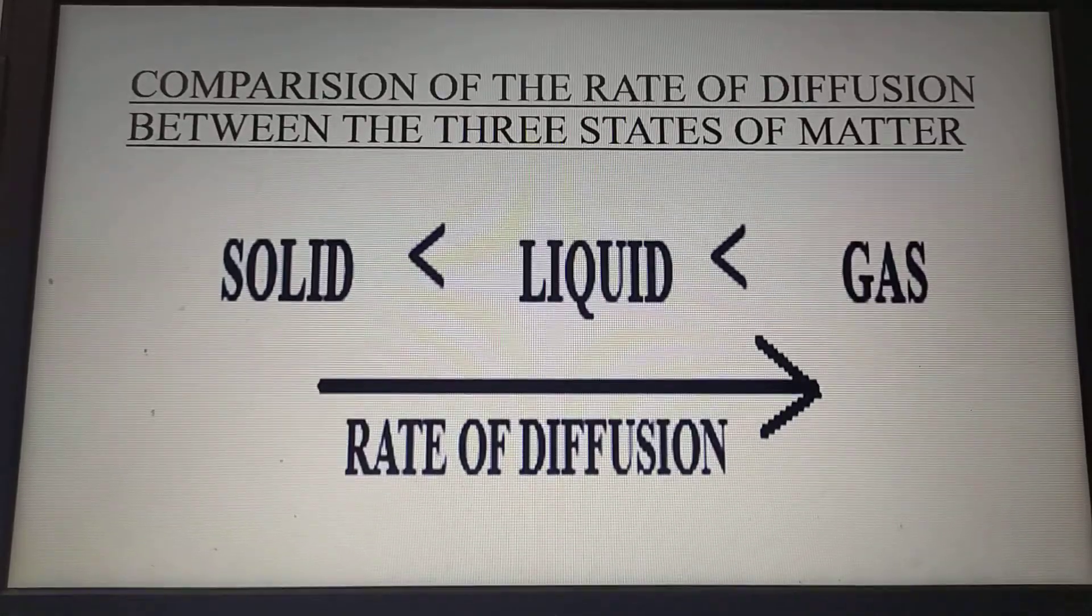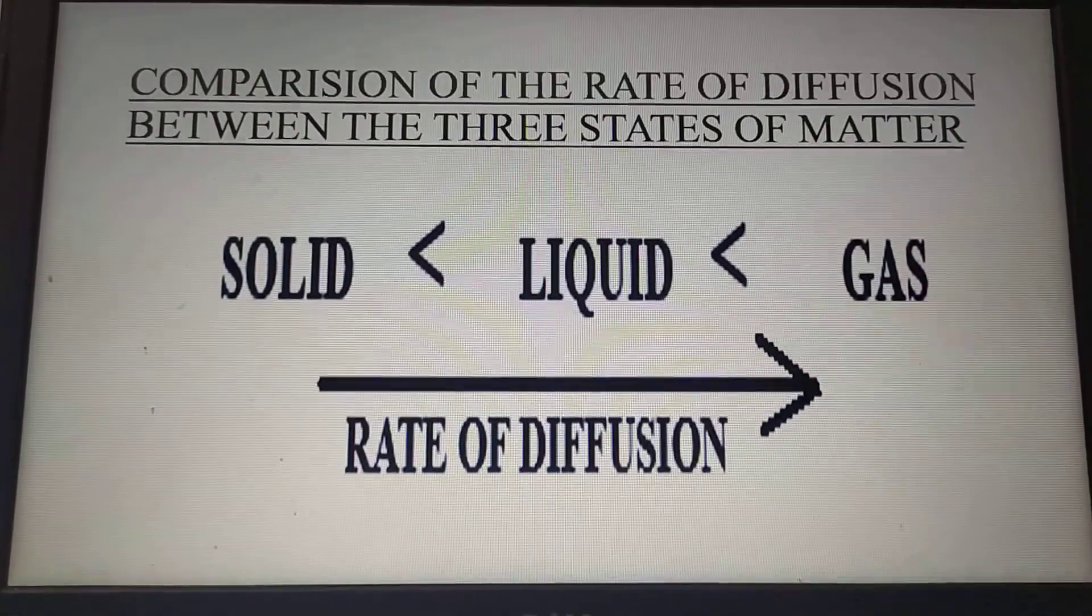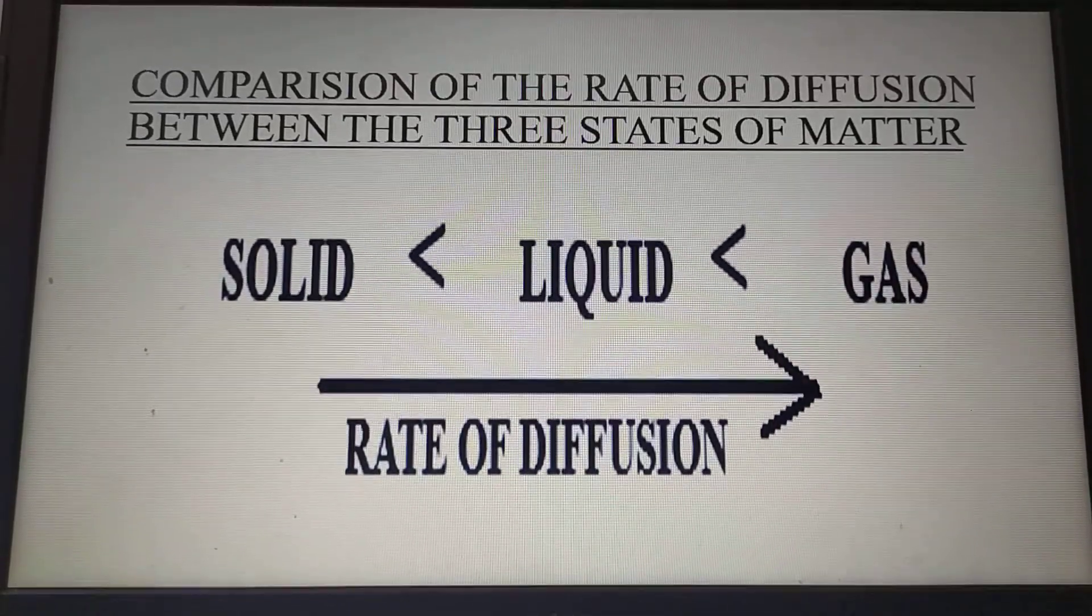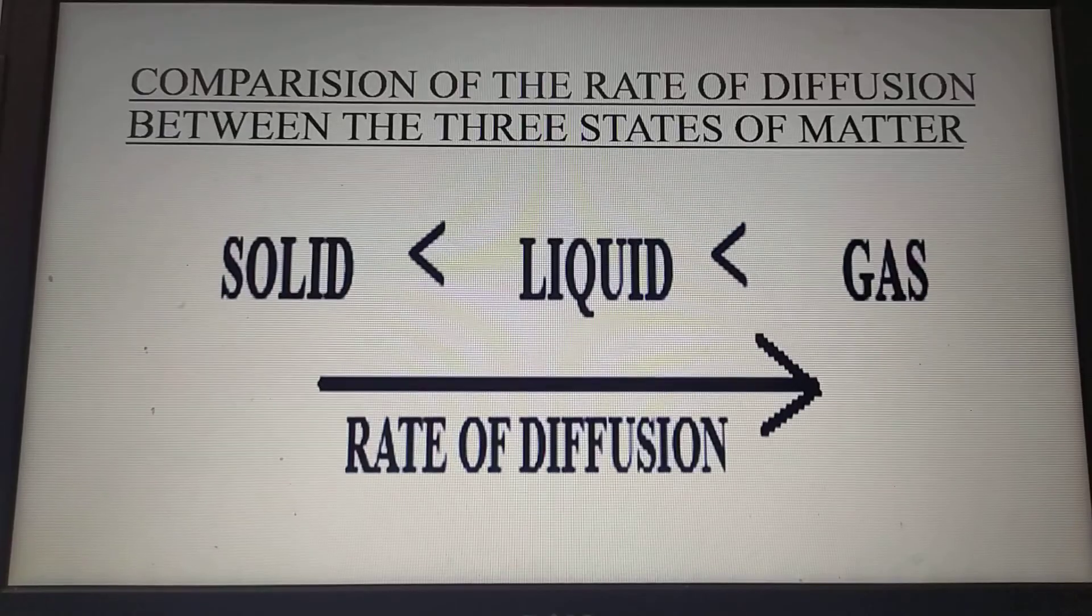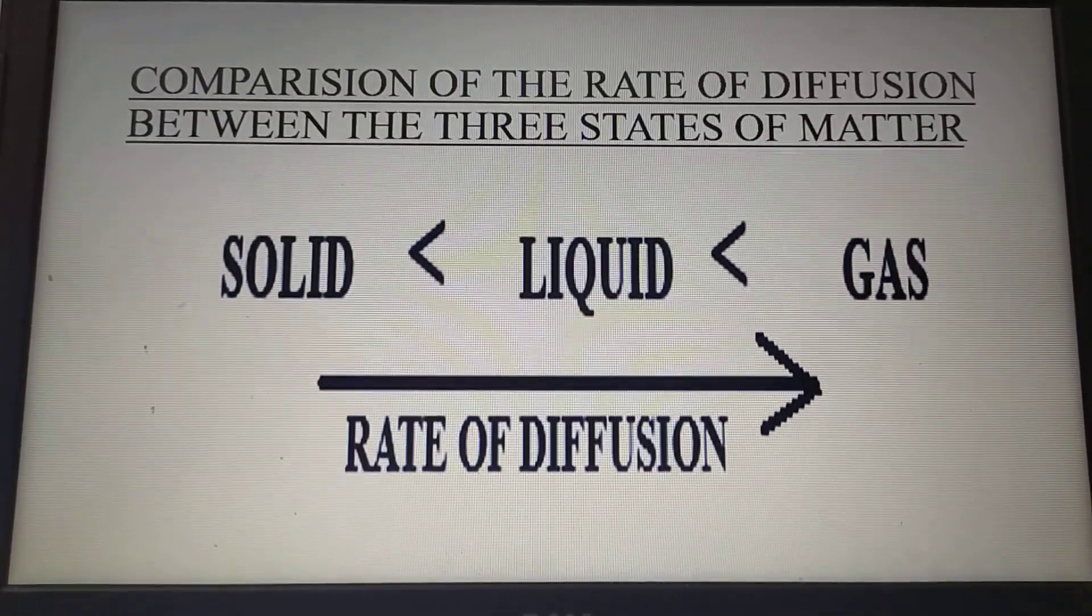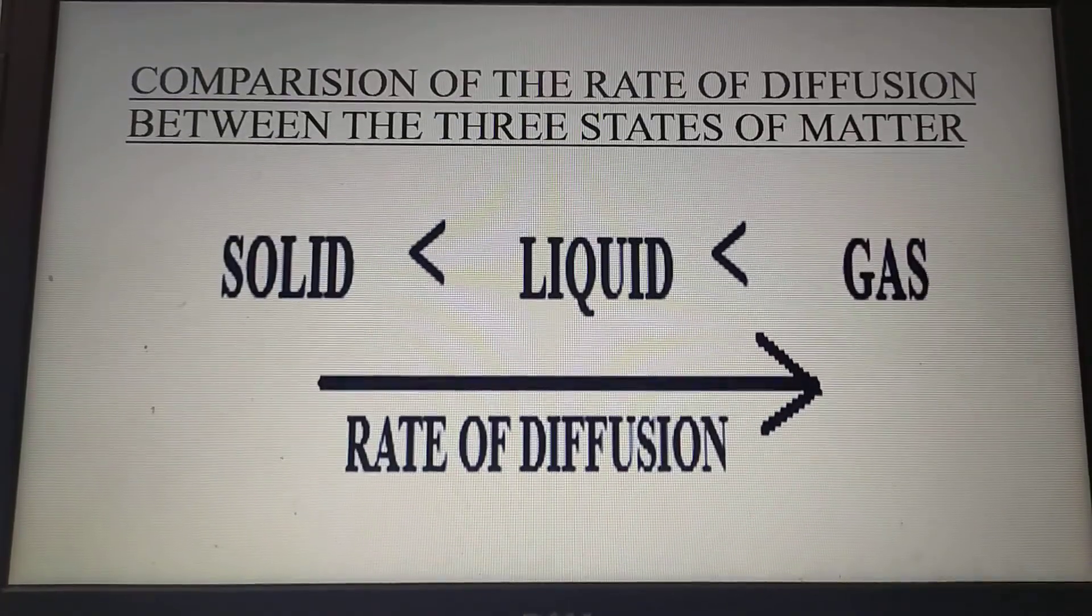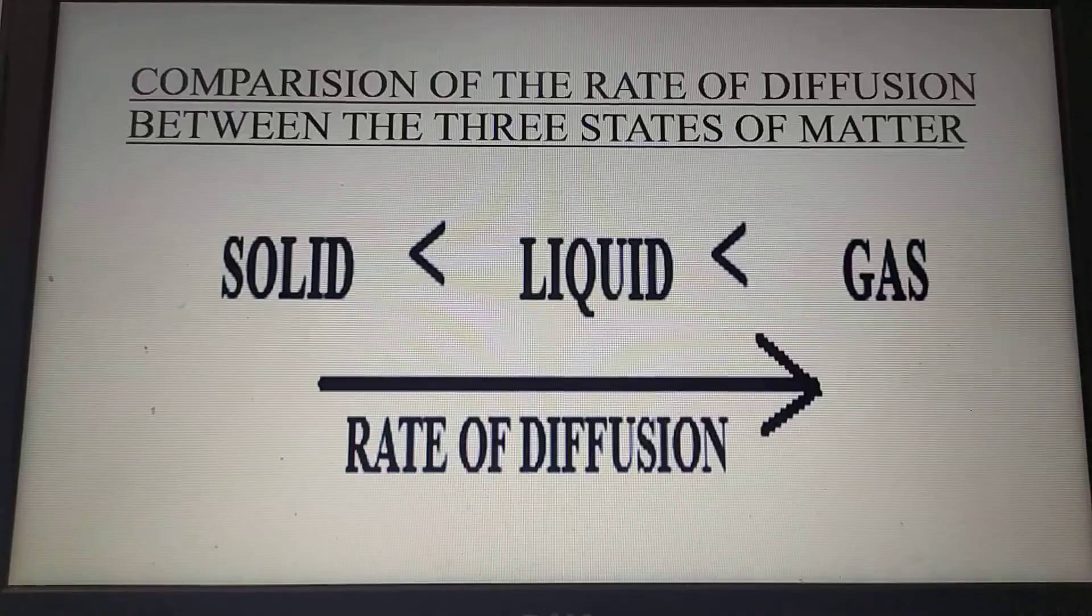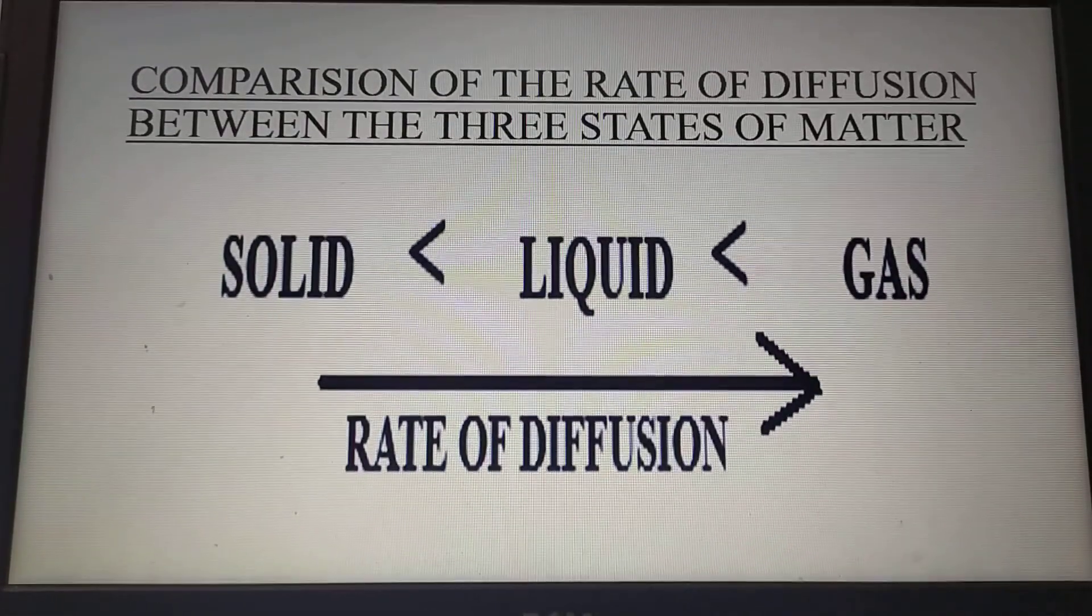The comparison of the rate of diffusion between the three states of matter can be given as: In case of solid, the rate of diffusion is minimum or least. In case of liquids, it is more than solids. And in case of gases, the rate of diffusion is maximum.